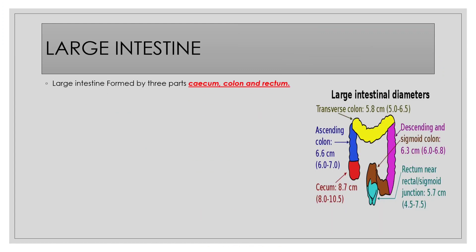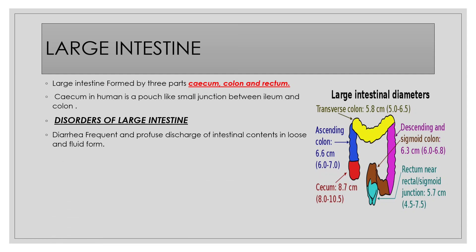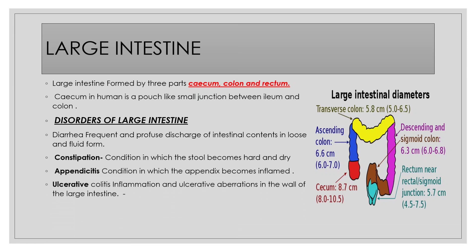The undigested material in the form of faeces is transported via the large intestine, where water is reabsorbed and the waste is temporarily stored in the rectum and further moved out through the anus. The large intestine comprises the cecum, ascending colon, transverse colon, descending colon, sigmoid colon, rectum, and the anus through which faeces moves out.